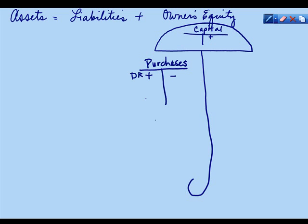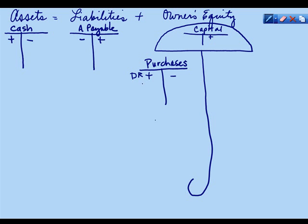When we purchase, there are a couple of different ways that we can handle a purchase. For example, we can pay in cash, or we can charge that particular one and have it payable in the near future. Let's say, for example, we purchased something for $100. Purchases goes up, and we could pay for that in cash, or it could be that we charged it to pay for it at a later date.